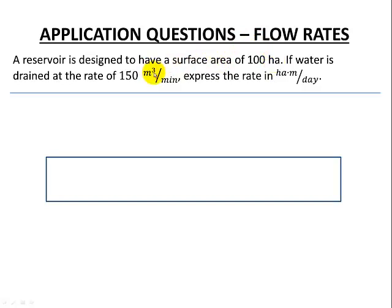Meter cubed is for volume. If we have hectares and meters, hectares is area and meters is length. So area times length is volume. We know that this is a unit of volume and this is a unit of volume. If you're not familiar with some of the units, try and take a bit of time to understand the category they come from and what they mean.